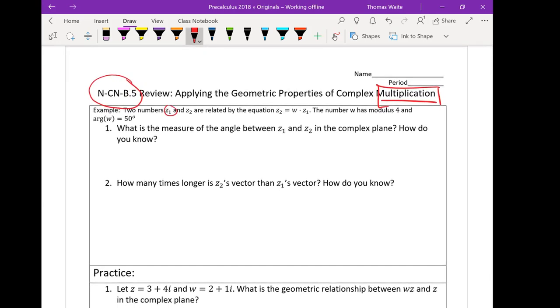There are two numbers Z1 and Z2 and they're related by this equation. If you remember, this looks a lot like the equation we had on the diagnostic quiz we took. It says the number W has modulus of 4 and argument W of 50. So it already told us the modulus and argument of this number W that we're multiplying by. It says, what is the measure of the angle between Z1 and Z2 in the complex plane? Explain how you know.